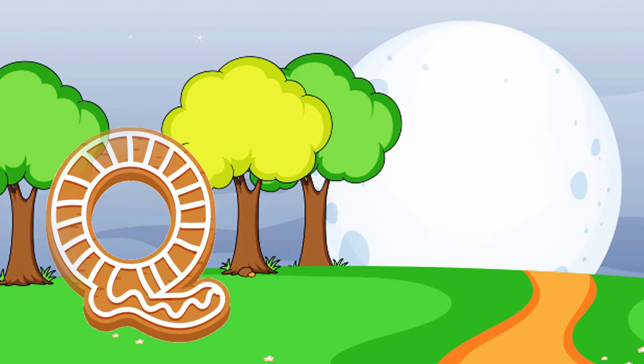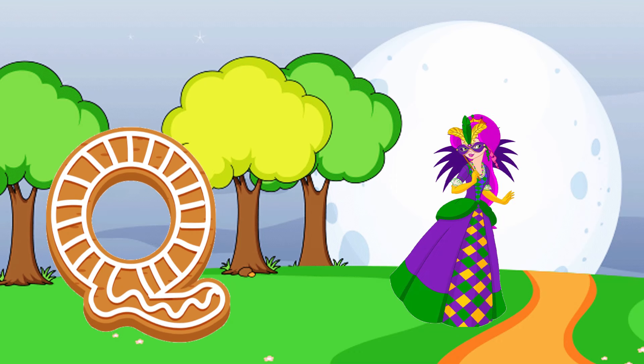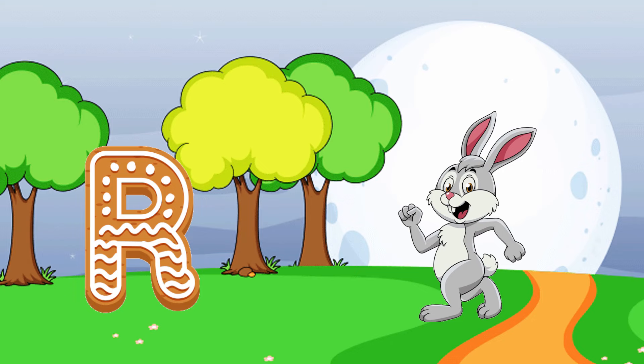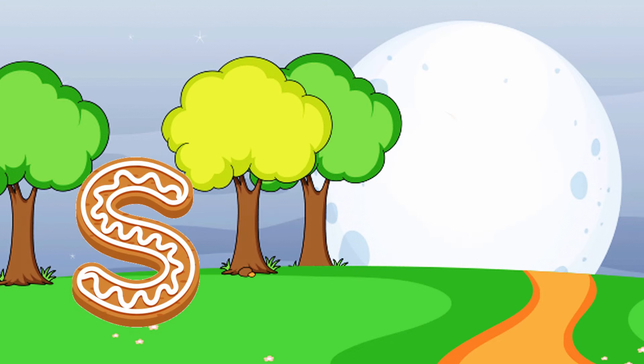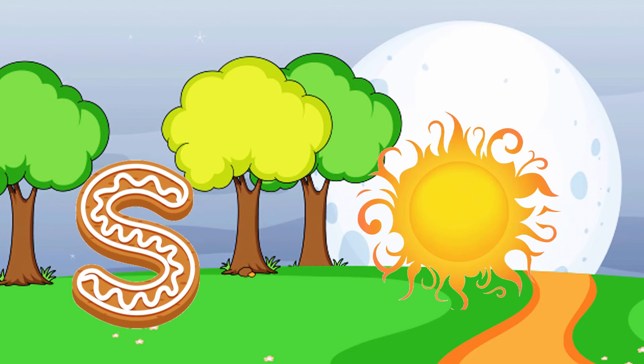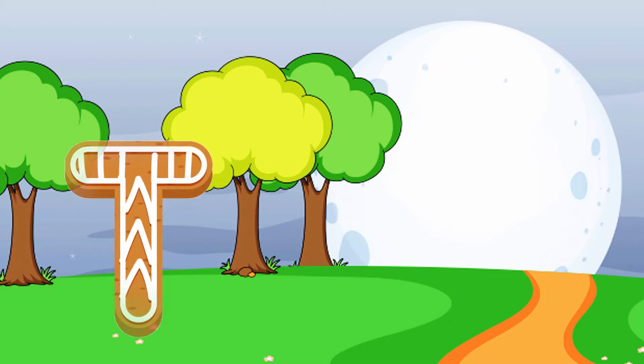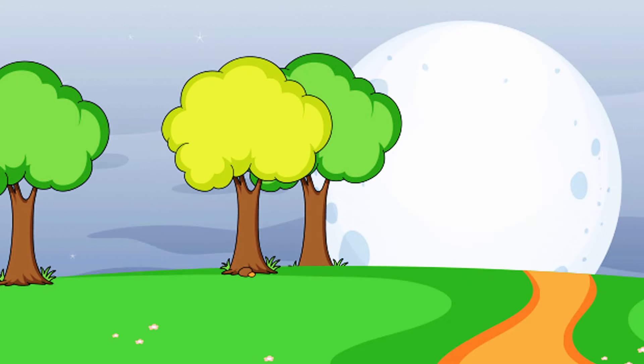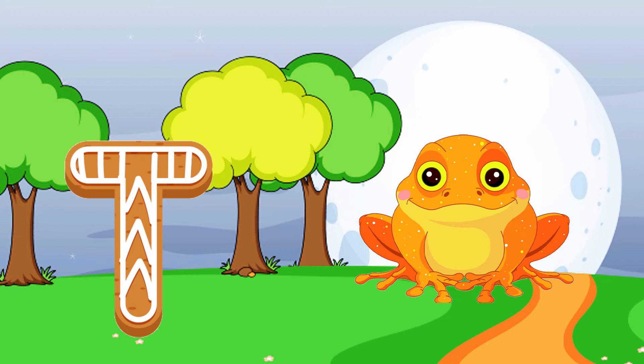Q is for queen, q-q-queen. R is for rabbit, r-r-rabbit. S is for sun, s-s-sun. T is for toad, t-t-toad.